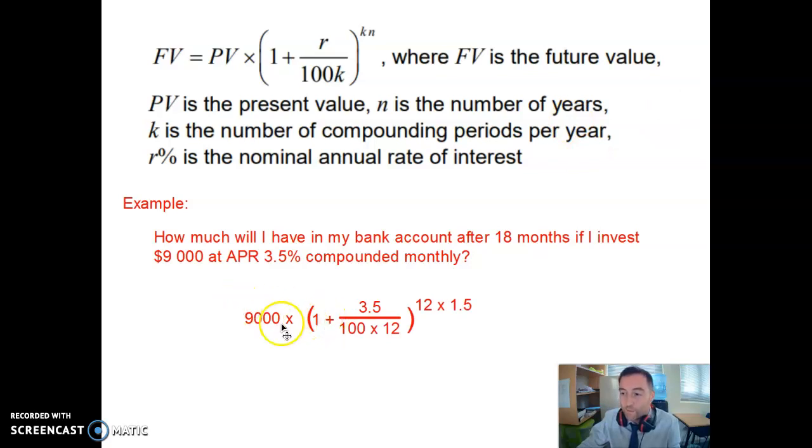So we substitute those values in: $9,000 multiplied by 1 plus 3.5, that's our rate, percentage rate APR, and then we say 100 times 12 on the bottom, and 12 times 1.5 is the sort of number of time periods really, because we've got one and a half years. 18 months is one and a half years.